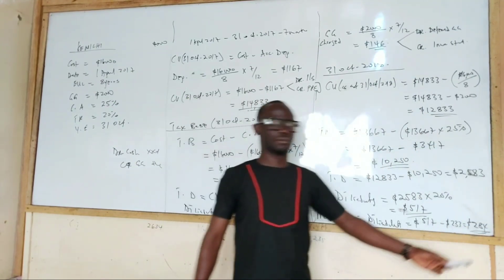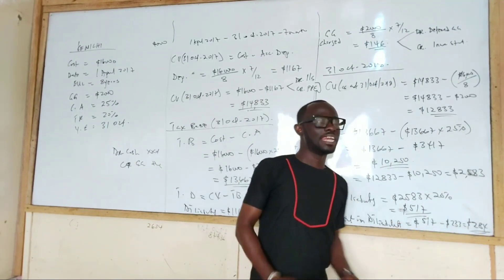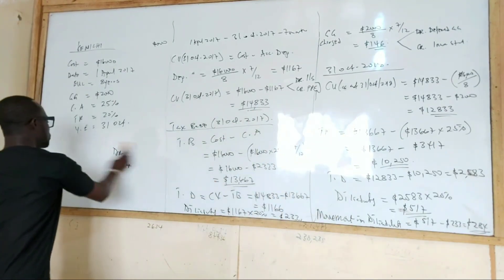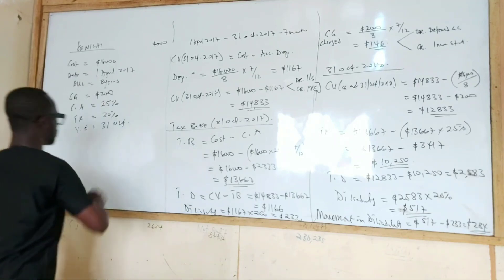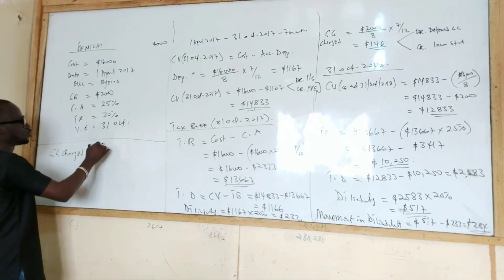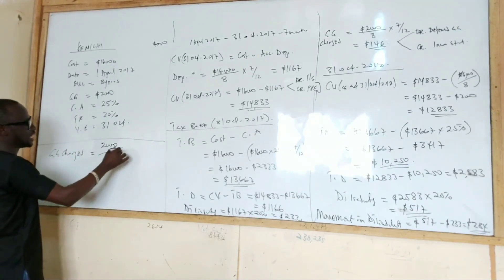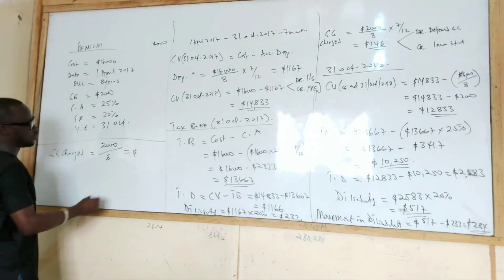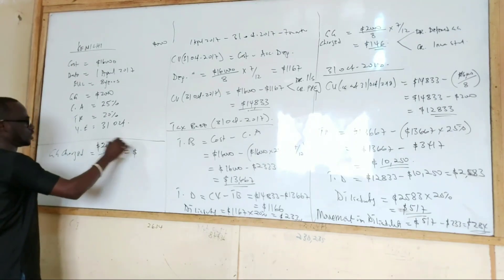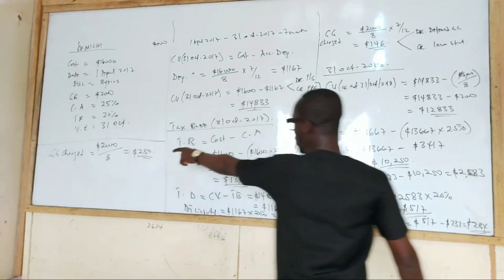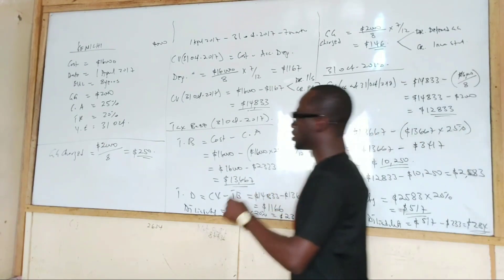So this is what goes to the income statement. Then in year 2, we need to charge the grant for year 2. Government grant charged for year 2 — this will be for the full year. So it will be 2,000 divided by 8, and that gives us 250. So this is what goes to the income statement for year 2 in relation to government grant.